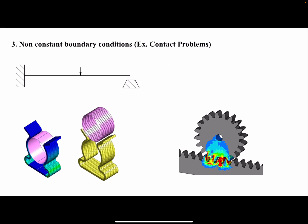The other type of non-linearity is when the boundary condition changes, as in contact problems. Initially there may be no contact, but as load is applied parts come into contact and the boundary condition changes — more parts come into contact as deformation increases. The most common example of a contact problem would be two gears in contact. From machine design, we have bending stresses and contact stresses, and contact stresses are non-linear — the relationship between force and displacement is non-linear.